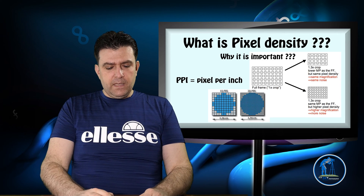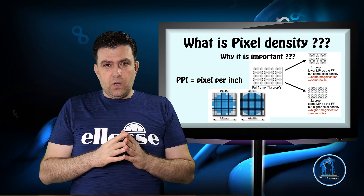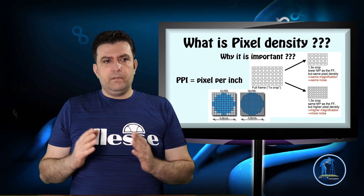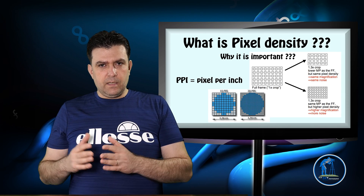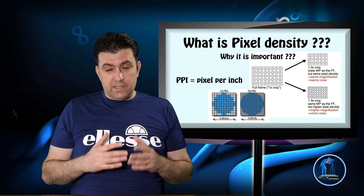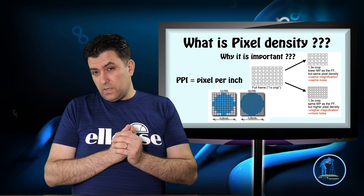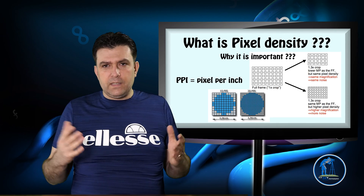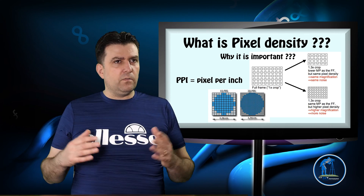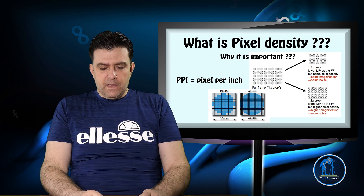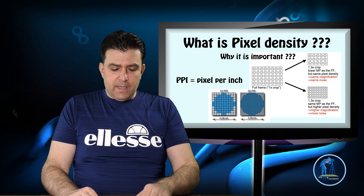Going further down to Micro Four Thirds, because those sensors are even smaller, the pixel density is even higher. A 20 megapixel Micro Four Thirds sensor will have a pixel density roughly like a 36 megapixel APS-C sensor, and roughly like a 50-60 megapixel full-frame sensor — which doesn't really exist yet, since the biggest full-frame sensor is around the Canon 5DSR at 50 megapixels. So let's focus on full-frame and APS-C.